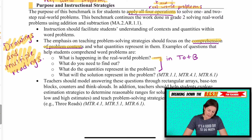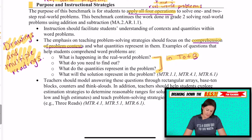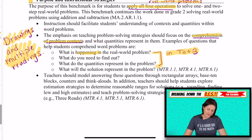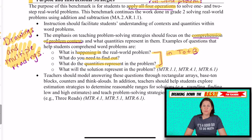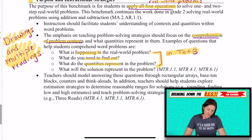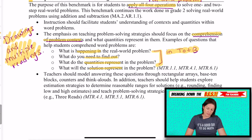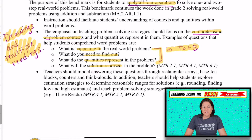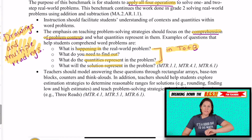These are some great guiding questions: What is happening in the real-world problem? What do we need to find out? What do the quantities represent — five what, right? And what will the solution represent in the problem? If you get an answer of 20 — 20 what? Always connecting it back to what's happening in the problem.